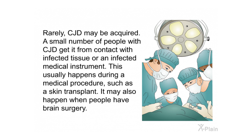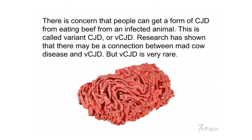Rarely, CJD may be acquired. A small number of people get it from contact with infected tissue or an infected medical instrument, usually during a procedure such as a skin transplant or brain surgery. There is also concern that people can get a form of CJD from eating beef from an infected animal, called variant CJD or vCJD. Research has shown a possible connection between mad cow disease and vCJD, but vCJD is very rare.